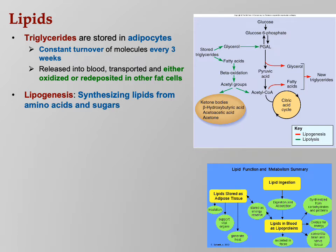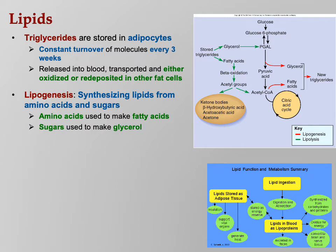Lipogenesis is a survival mechanism. Paleolithic humans — when you came across a food source, who knew when you'd find food again? So you gorged yourself on food when you found it, and your body was efficient at packing it away for later. Amino acids are used to make fatty acids; sugars are used to make glycerol. And with glycerol and fatty acids, what can we make? A triglyceride.